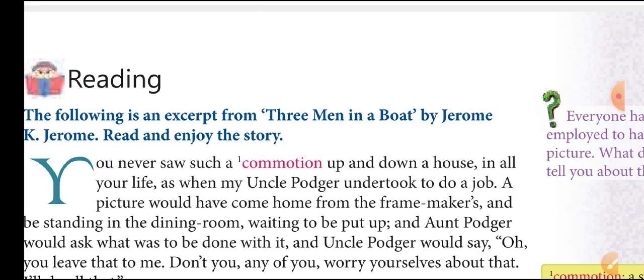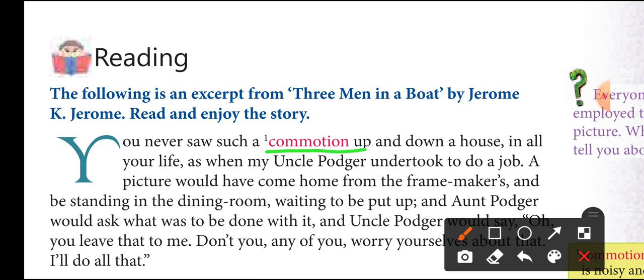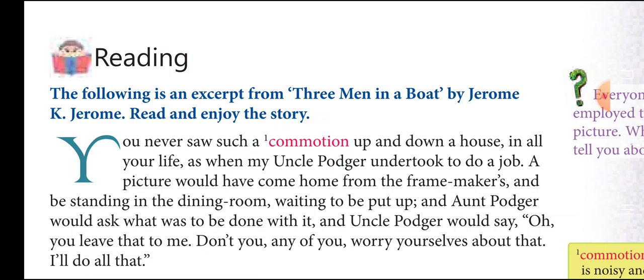The first paragraph of the story says: 'You never saw such a commotion up and down a house.' So the first important word here is 'commotion,' written in red ink in your book. The meaning given is a state of noise and confusion — when you do not know what is going to happen. So: 'You never saw such a commotion up and down a house in all your life as when my uncle Podger undertook to do a job.' This 'my' is the narrator, telling us how he created confusion in the entire family when he was hanging the picture.